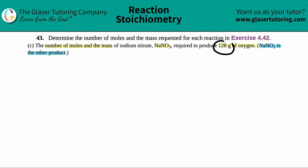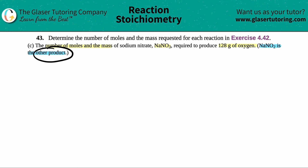They gave us information about a certain compound — 128 grams of oxygen — and they're asking for another compound. We want to know the moles and the mass of sodium nitrate, NaNO3. Since we're producing something and NaNO2 is another product, the first thing we have to do is find the balanced equation. We've done tons of problems like that, so check the playlist for a review on balancing equations.